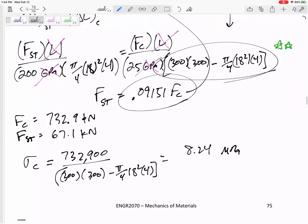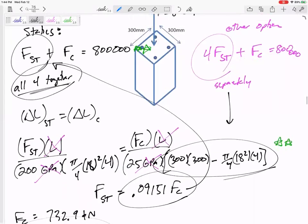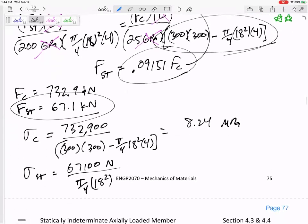And the stress in the steel, 67,100 newtons. But it's a much smaller area, pi by 4, 18 squared. Now, you stay consistent. This force was for all of them together. And so I've got a 4 right here. I'm dividing it by the area of all four of them together. This equals 65.9 MPa.